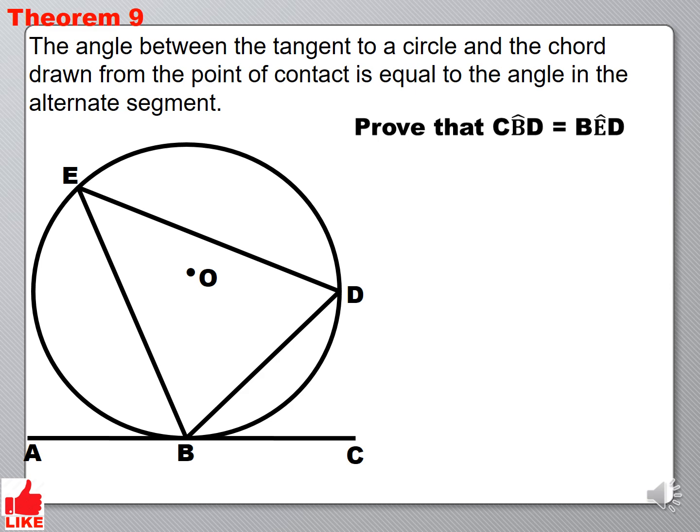And we are particularly focusing on the tangent-chord theorem, proving the tangent-chord theorem. Now the theorem says that the angle between the tangent to a circle and the chord drawn from the point of contact is equal to the angle in the alternative segment. That is the theorem that we would like to prove.